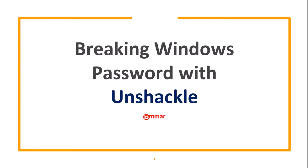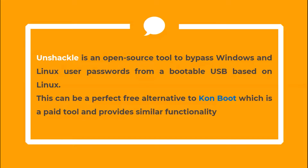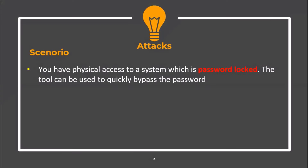In this video, we are going to see how we can use an open source tool called Unshackle to break Windows passwords. Unshackle is an open source tool to bypass Windows and Linux user passwords from a bootable USB based on Linux. This can be a perfect free alternative to ConBoot, which is a paid tool and provides similar functionality. This tool is perfect for an attack scenario where you have physical access to a system that is password locked, and it can be used to quickly bypass the password.